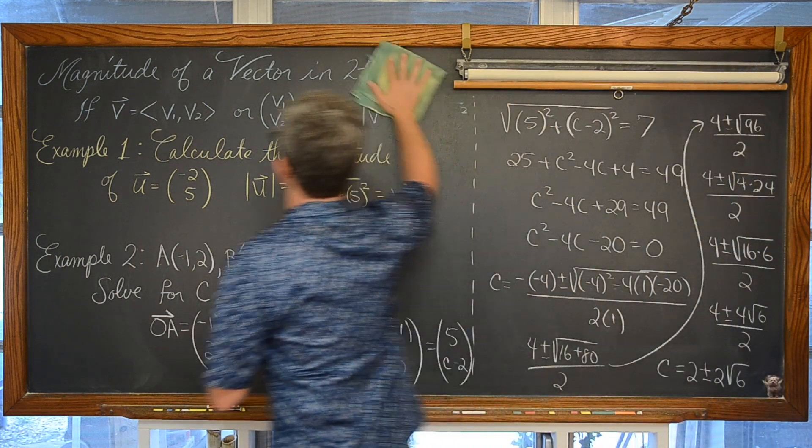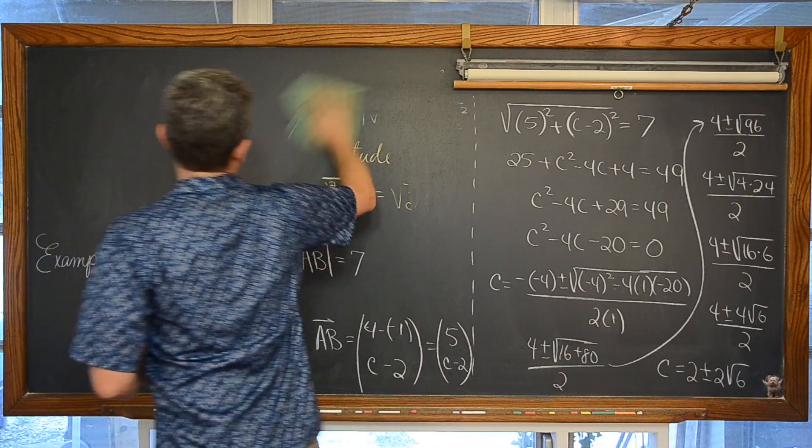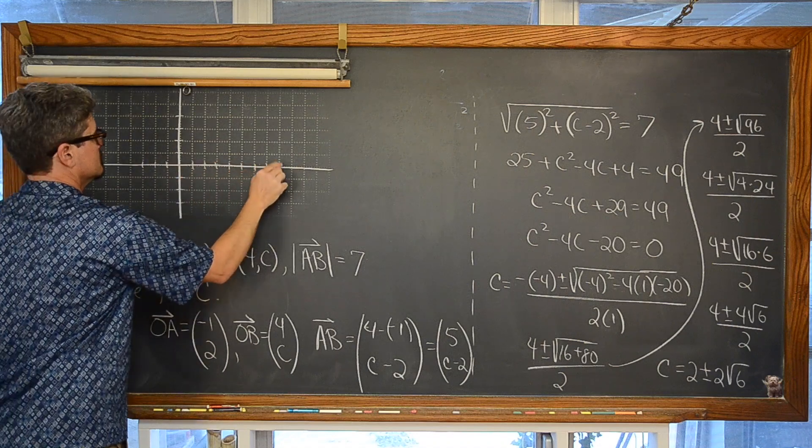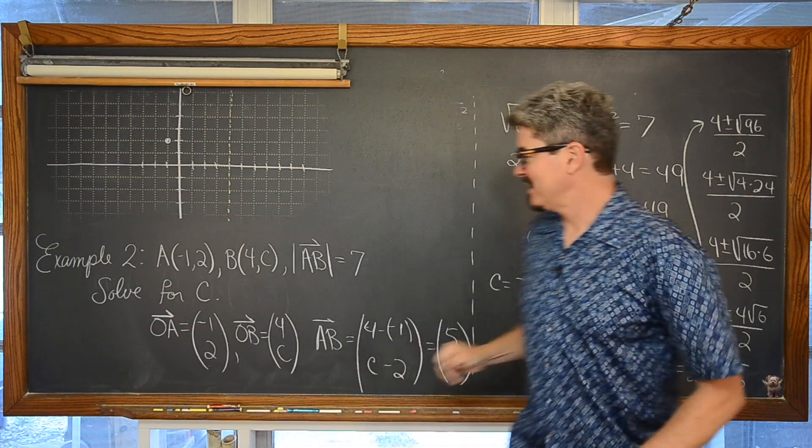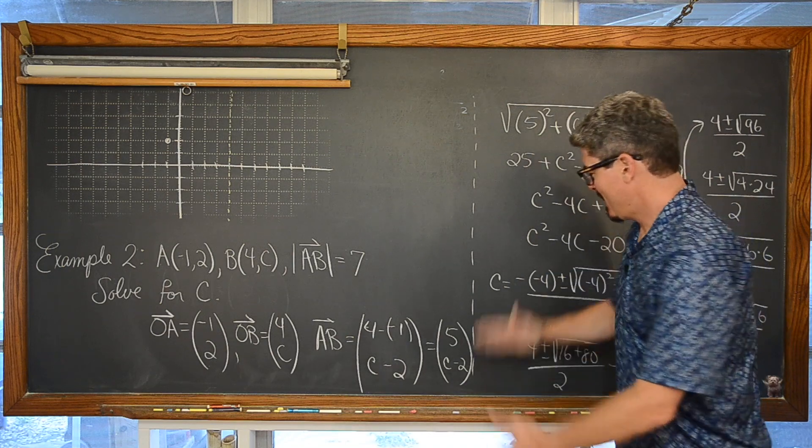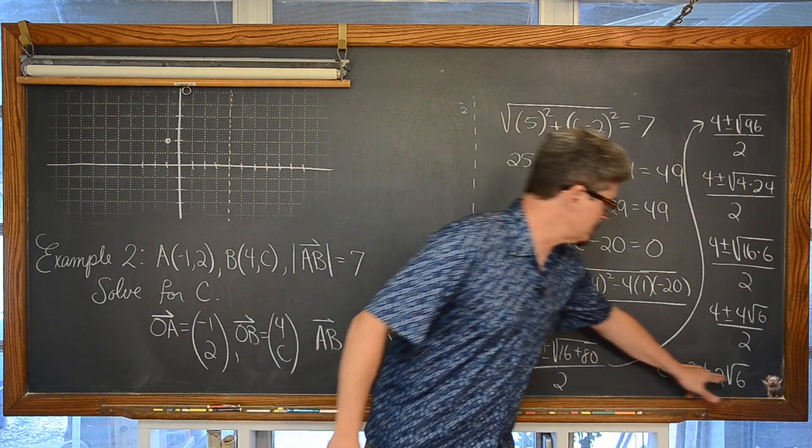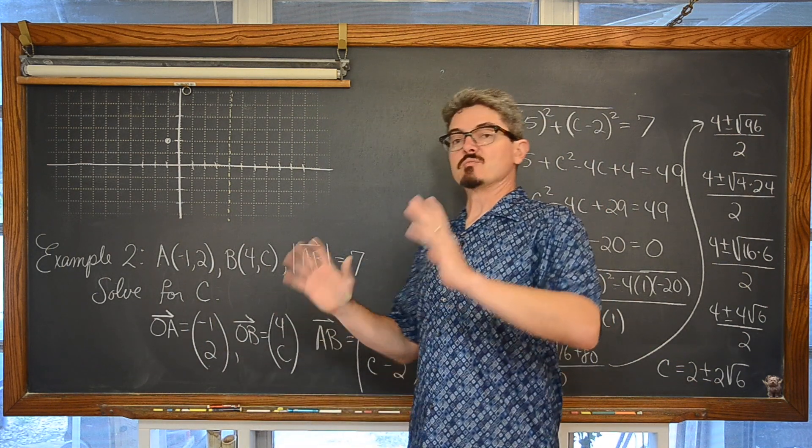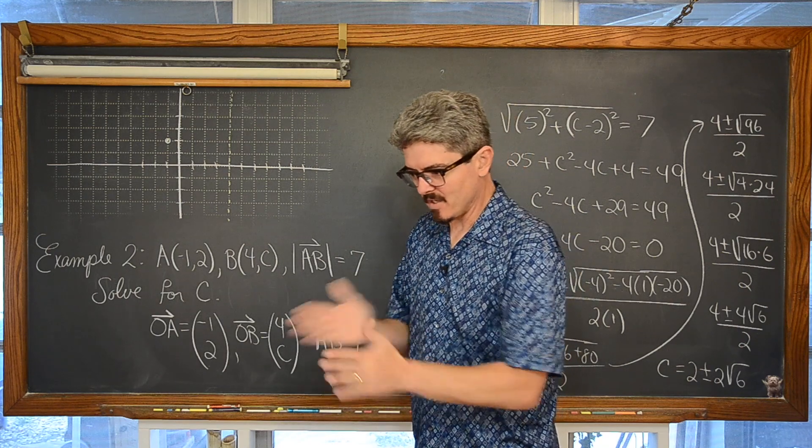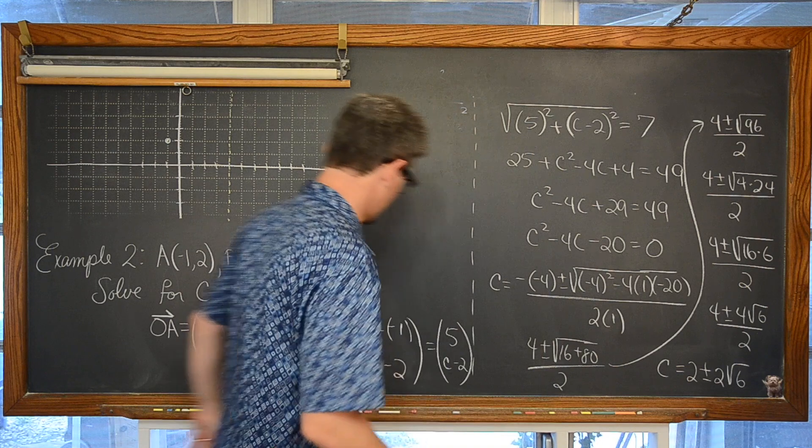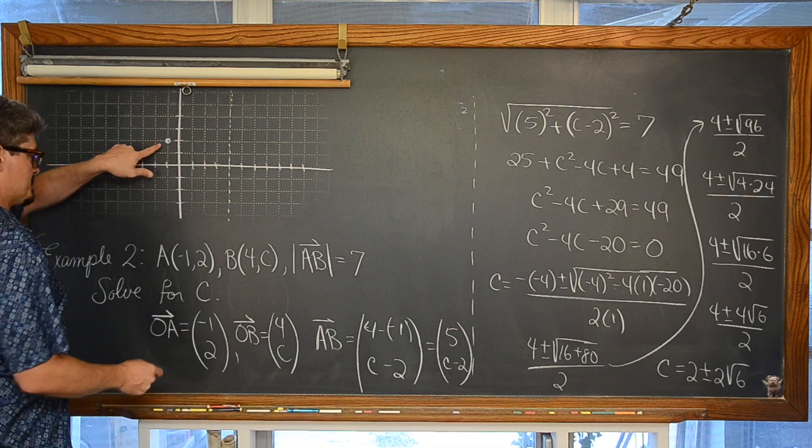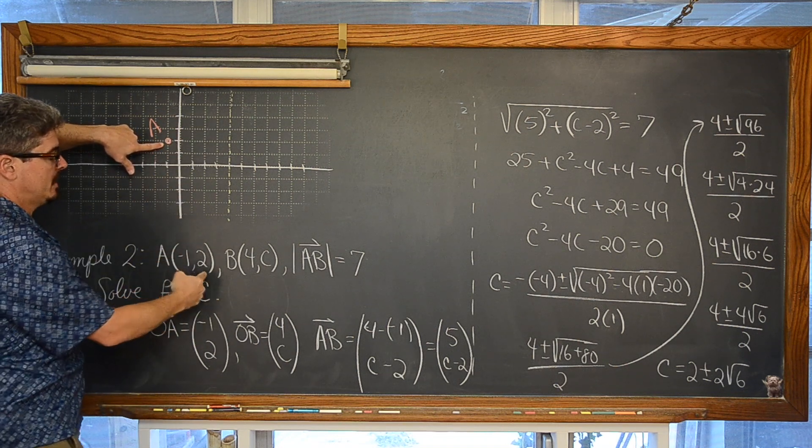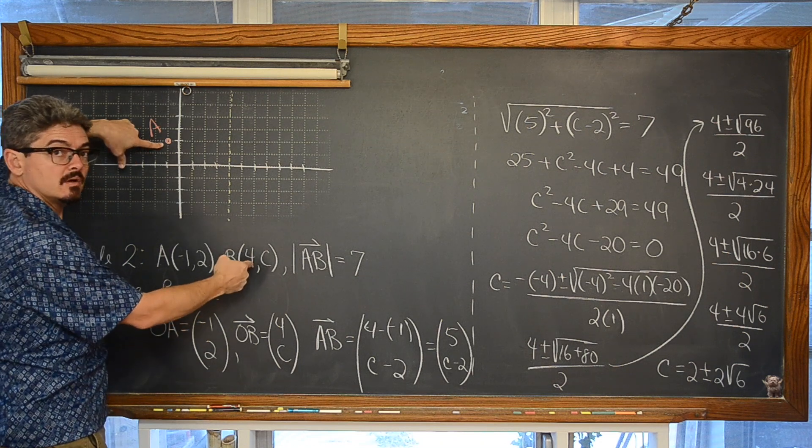Why is it we are getting two possible values for C? Well, a quick little sketch will hopefully help to clarify that. Alright, now I am getting myself in a little bit of trouble because I am going slightly off script. I don't know the decimal approximation of 2 plus 2 square root of 6 or 2 minus 2 square root of 6. So I am going to very much ballpark this.